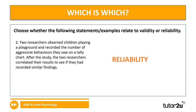The second example: two researchers observed children playing in a playground and recorded the number of aggressive behaviours they saw on a tally chart. After the study, the two researchers correlated the results to see if they had recorded similar findings. That's an assessment of interrater reliability — a check of the consistency between two different observers and their results.